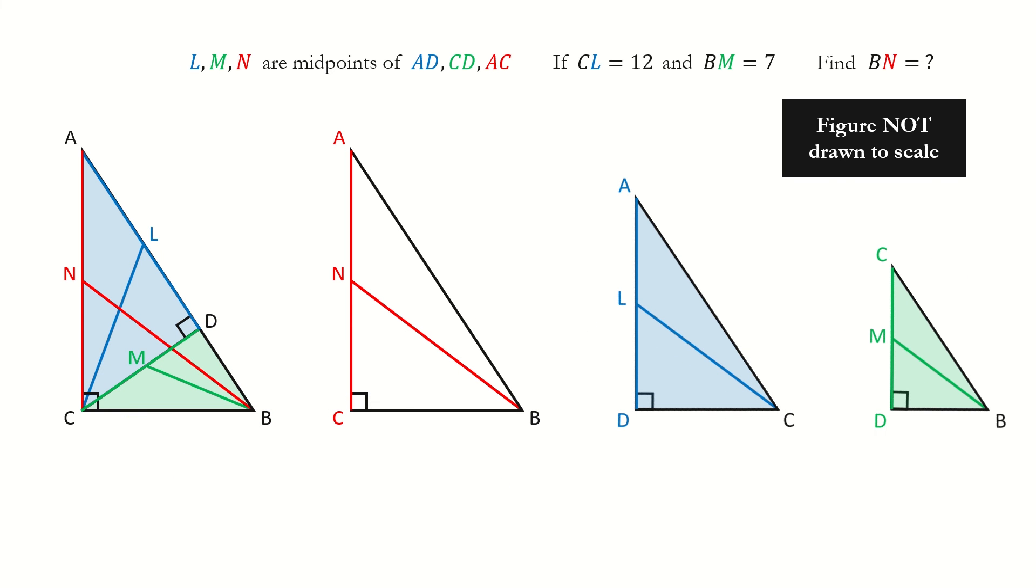To make it better visualize, I put them in the same orientation. Because these three triangles are similar, if we take the ratio for their height over the median, they are equal.